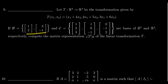We're also given a basis for R3 — a non-standard basis C — consisting of the vectors (1, 2, 3), (1, 0, -1), and (0, -1, 2).